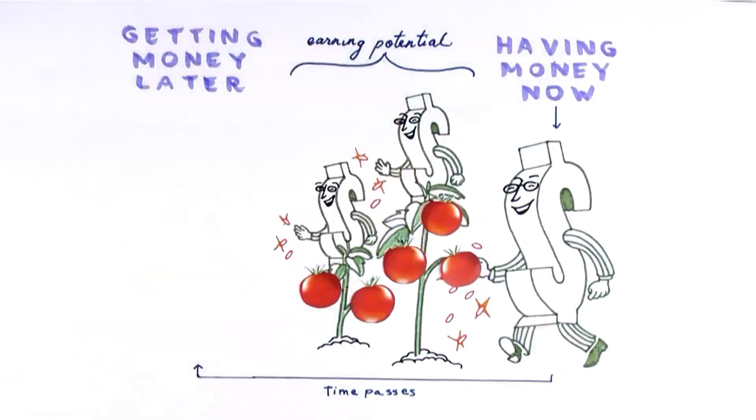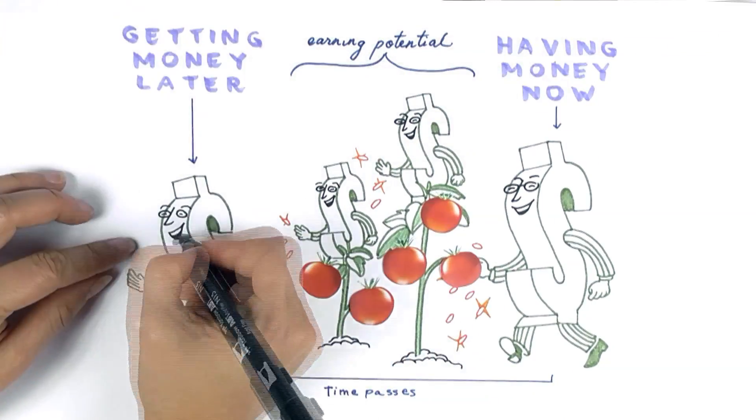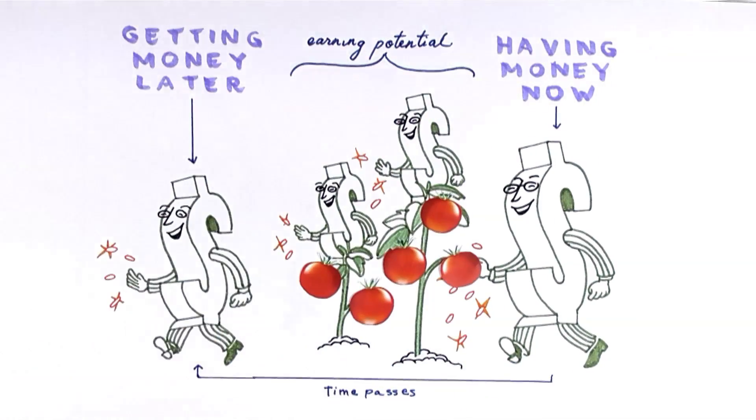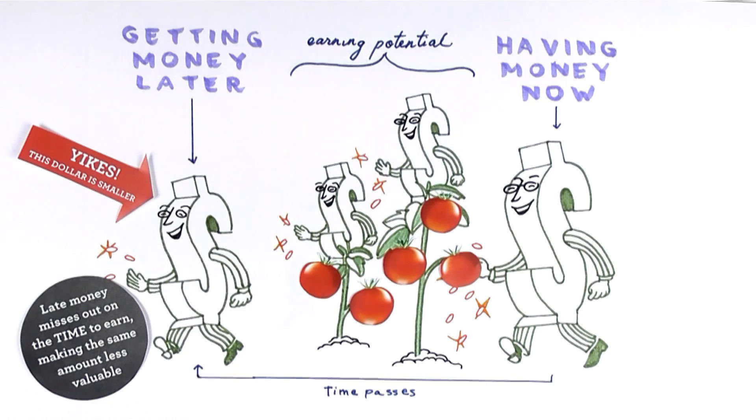With that logic, if you flip it around, you can see that getting a dollar in the future deprives you of the ability to make the money you would have made with a dollar today. The time value of money essentially recognizes a quantifiable monetary value to time.